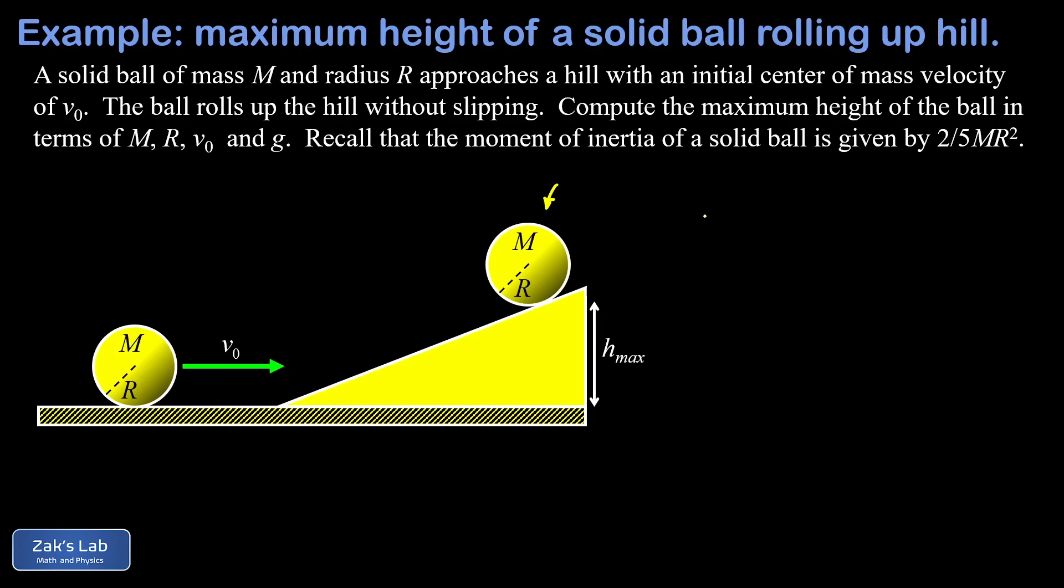So to solve the problem we'll just start at the beginning and say E initial is equal to E final. And in my initial state I have two types of kinetic energy. I have my translational piece, which for now I'm just going to talk about generically as one half M v squared, and I have my rotational piece, again avoiding any specifics at this point, just one half I omega squared.